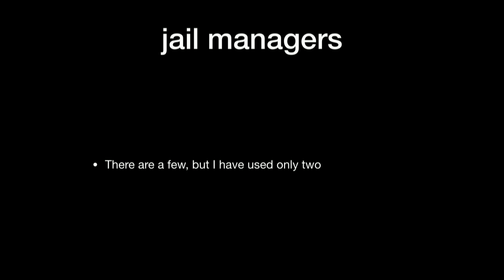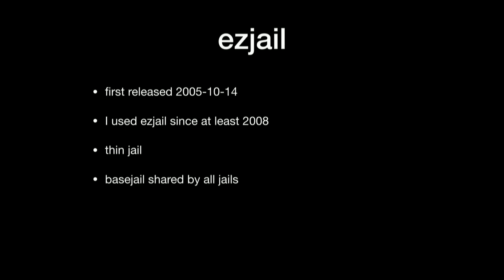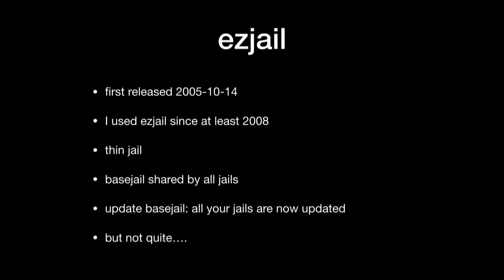I've used both iocage and EasyJail — both at the same time on different machines and both at the same time on one machine, when I was converting from EasyJail to iocage. They do co-exist rather nicely. EasyJail was first released in 2005, but I started using it in 2008. It uses thin jails via a base jail that is then shared by all the other jails. The beauty of this is that to update, I would FreeBSD-update the host, then do ezjail-update -U on the base jail, and reboot — everything done. But not quite, as I'll point out later.